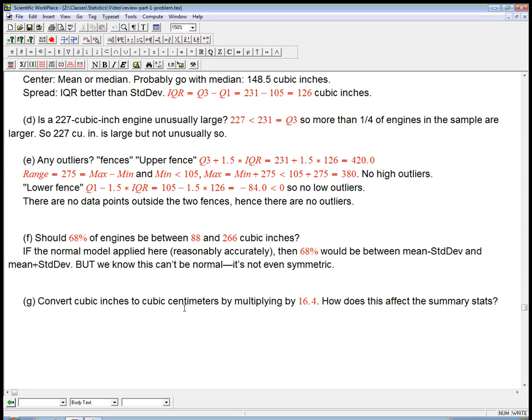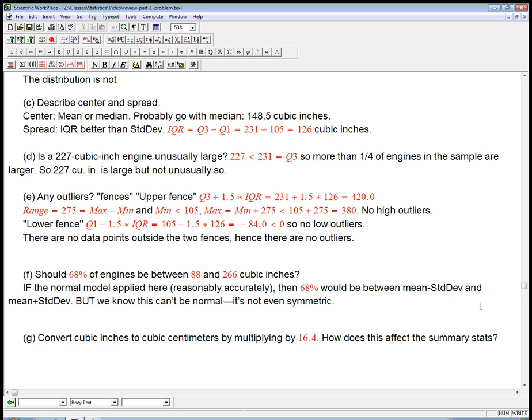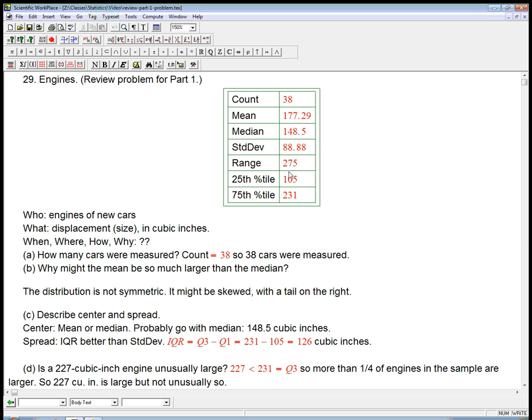What if you converted cubic inches to cubic centimeters by multiplying by 16.4? How does this affect the summary stats? This is an interesting thing because they're not giving us the data points. They're not giving us the 38 numbers for the engines. Those were calculated in cubic inches, and the summary stats are shown here all in cubic inches. What if somebody said, wait, I want metric. I want cubic centimeters.